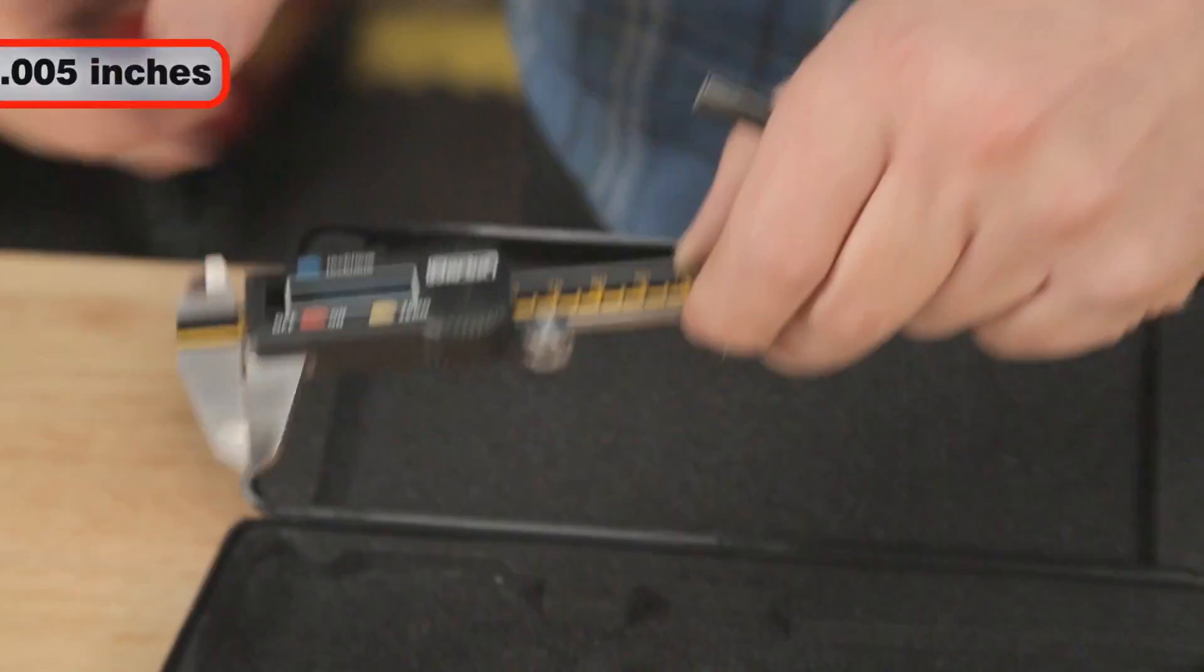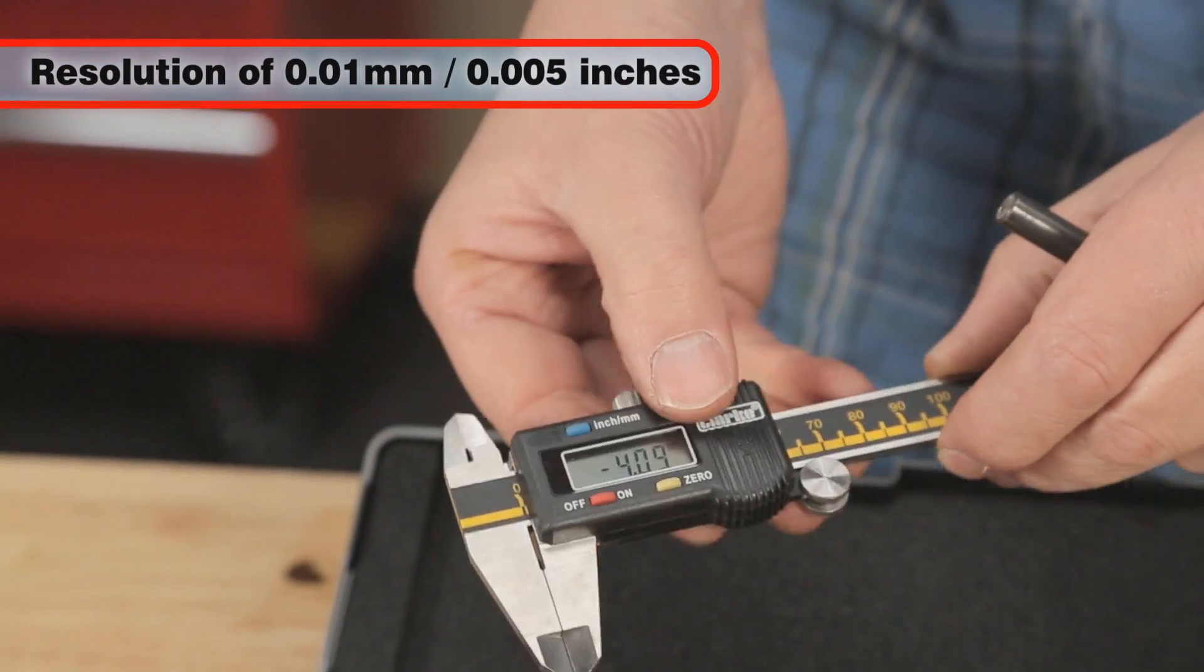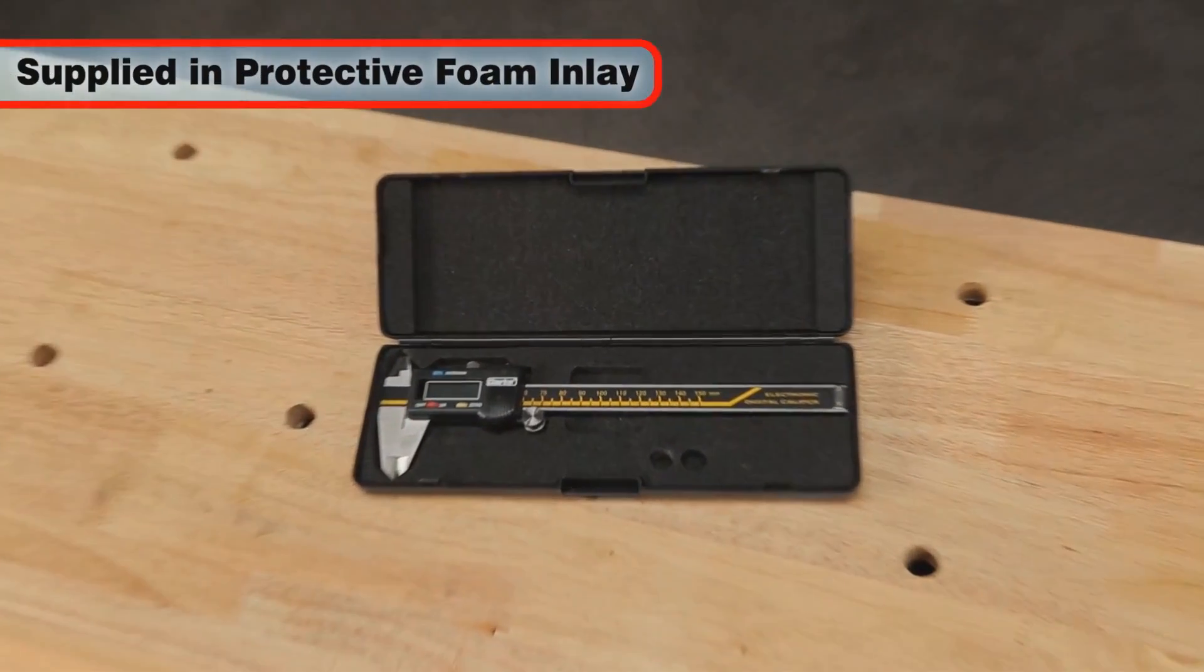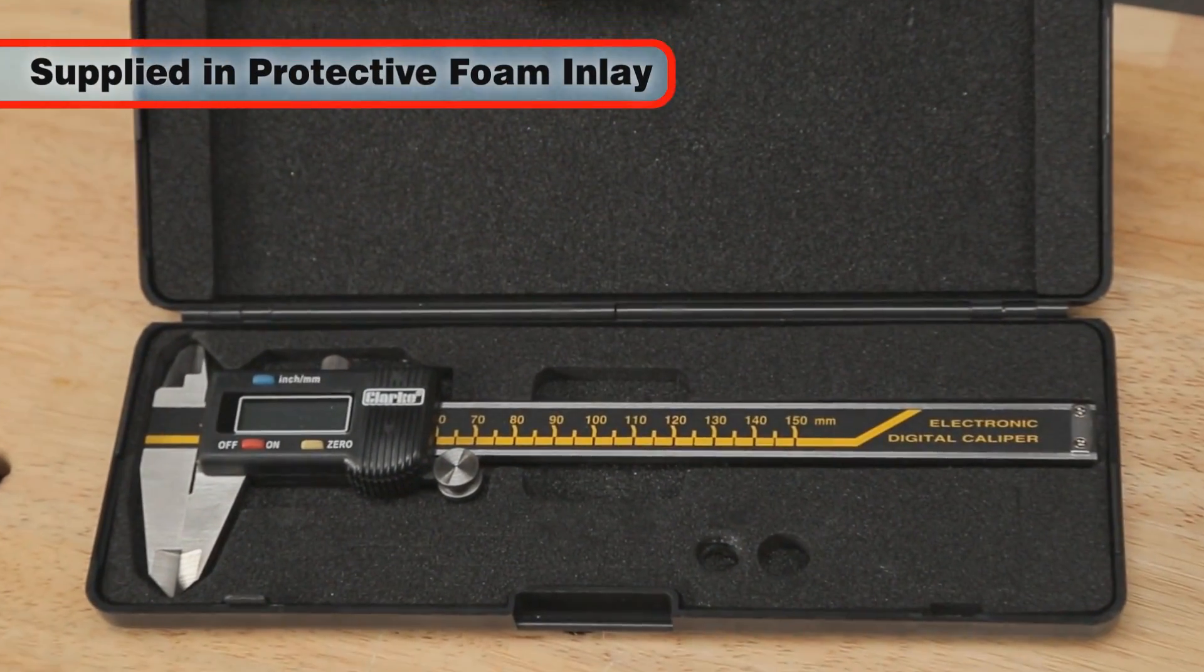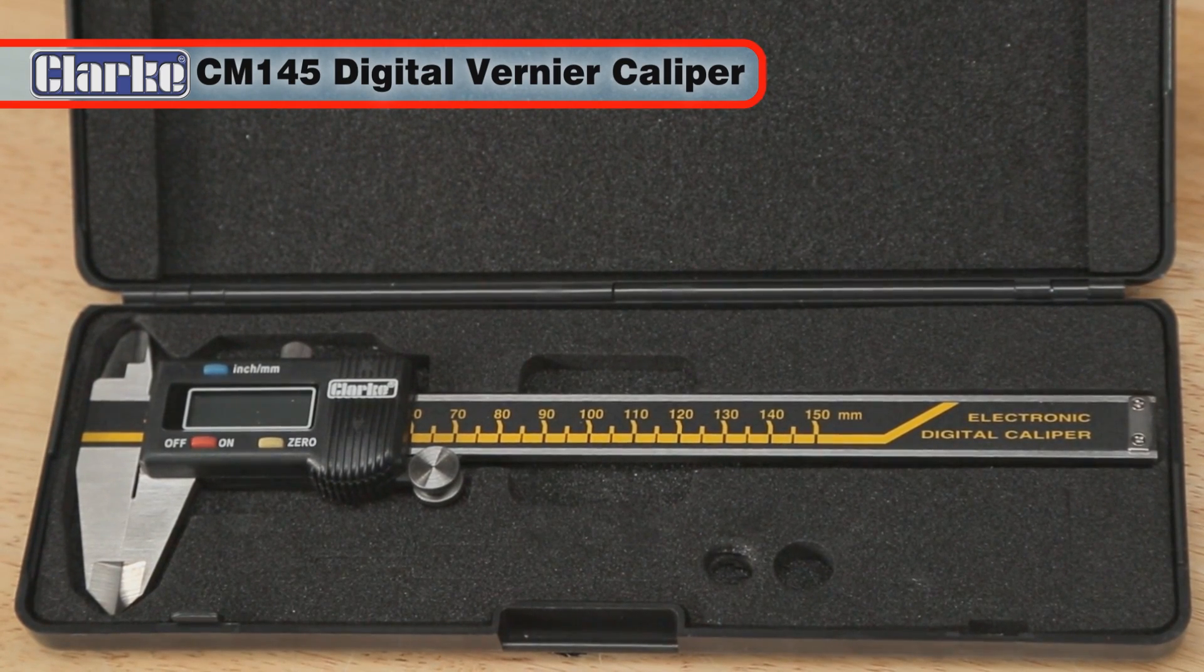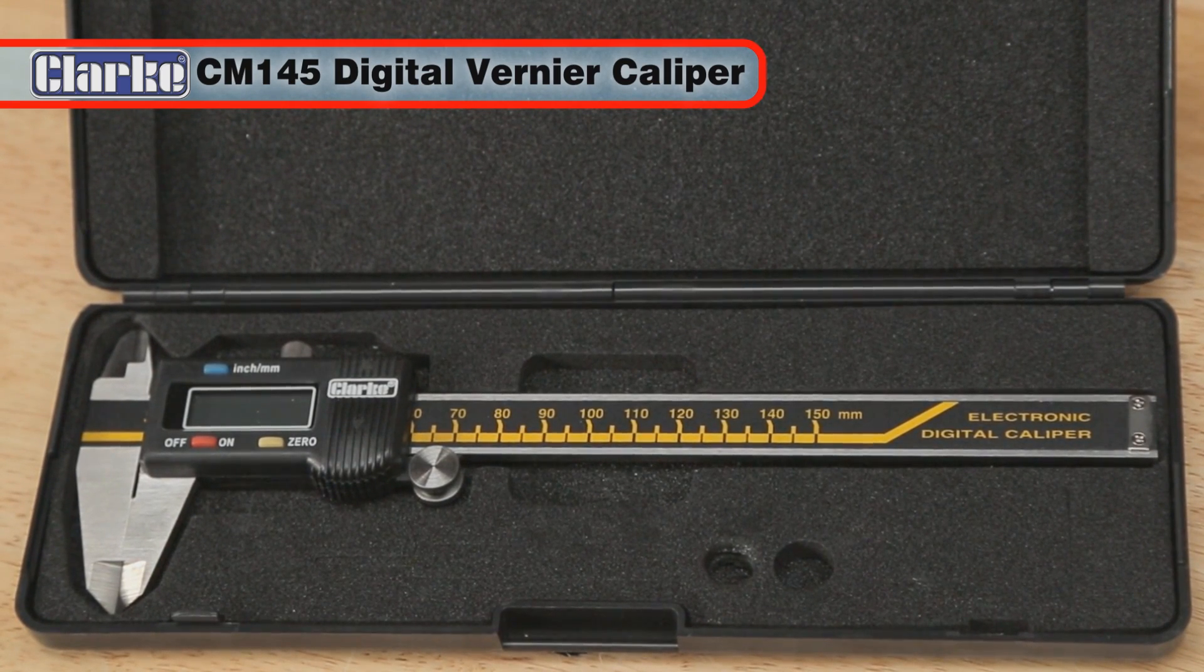It will read down to a resolution of 0.01 millimeters, five thousandths of an inch. Supplied in a protective foam inlay, the CM145 high-grade stainless steel tool will give you many years of precision measurement.